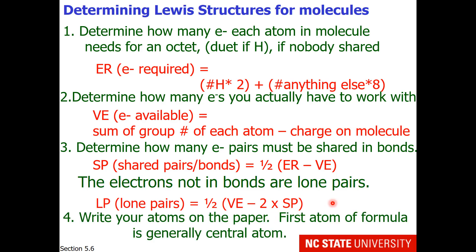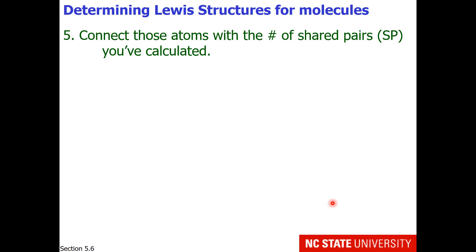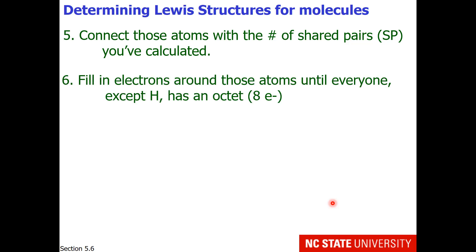Then to draw the structure, you write your atoms on the paper, and the first atom of the formula is generally the central atom. Then one starts with bonds. Connect those atoms with the number of shared pairs that have been calculated. Then one fills in electrons around those atoms until everyone except hydrogen has an octet. Hydrogen will be happy with one bond.